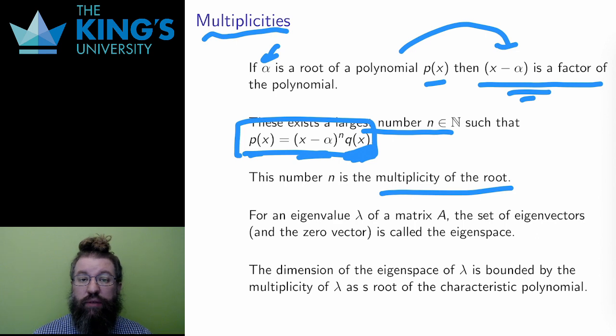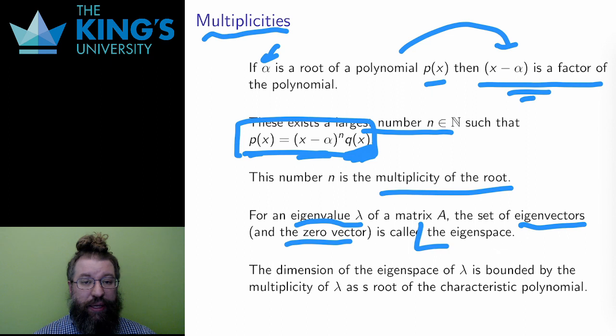Well, for each eigenvalue lambda, there are a bunch of eigenvectors, and if I include zero, these eigenvectors form a linear subspace, a line or a plane, or something similar, all of eigenvectors. Since it's a linear subspace, it is called the eigenspace of the eigenvalue.